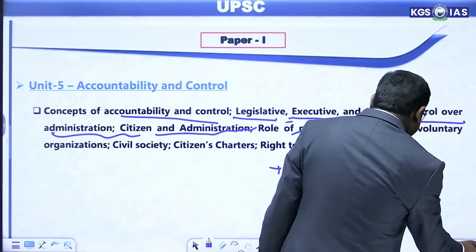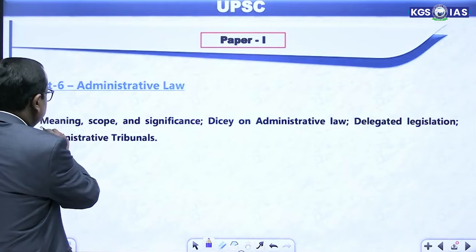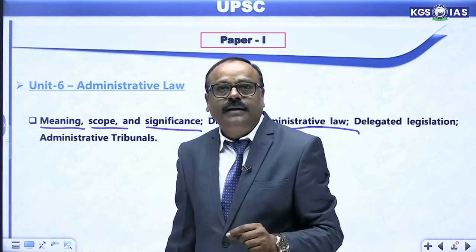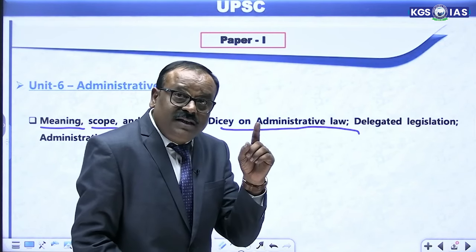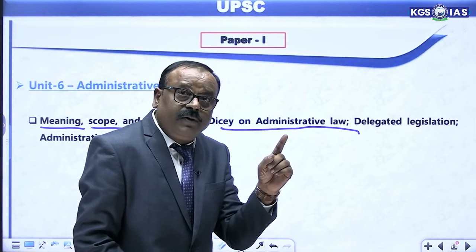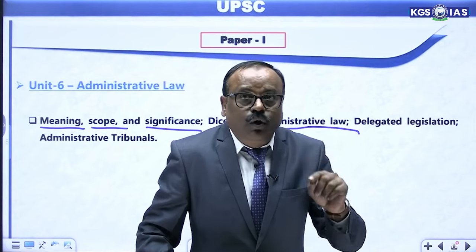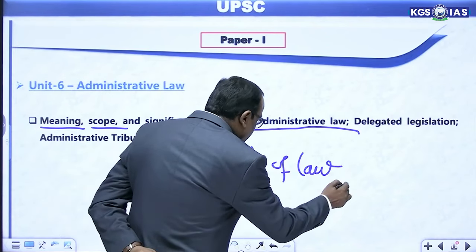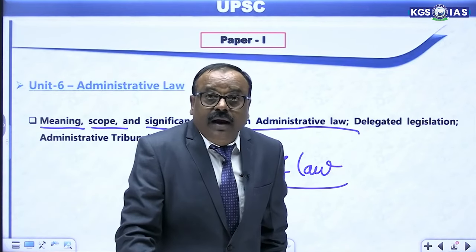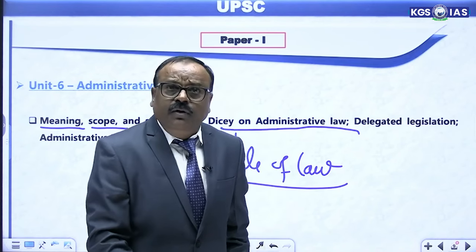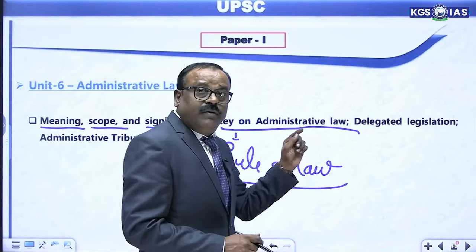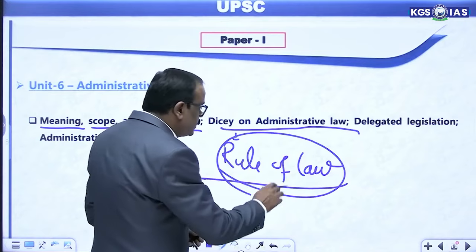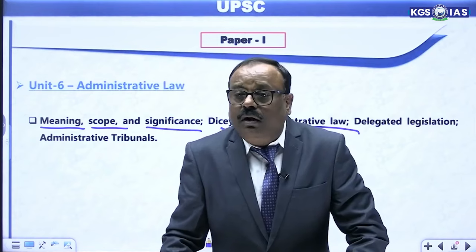The sixth unit is administrative law. Under administrative law there is meaning, scope, significance and Dicey's views on administrative law. Remember that Dicey was actually against the administrative law — he never favoured it. The concept of rule of law given by Dicey was against the administrative law. So when you study Dicey's views on administrative law, you have to discuss the rule of law very clearly as well.